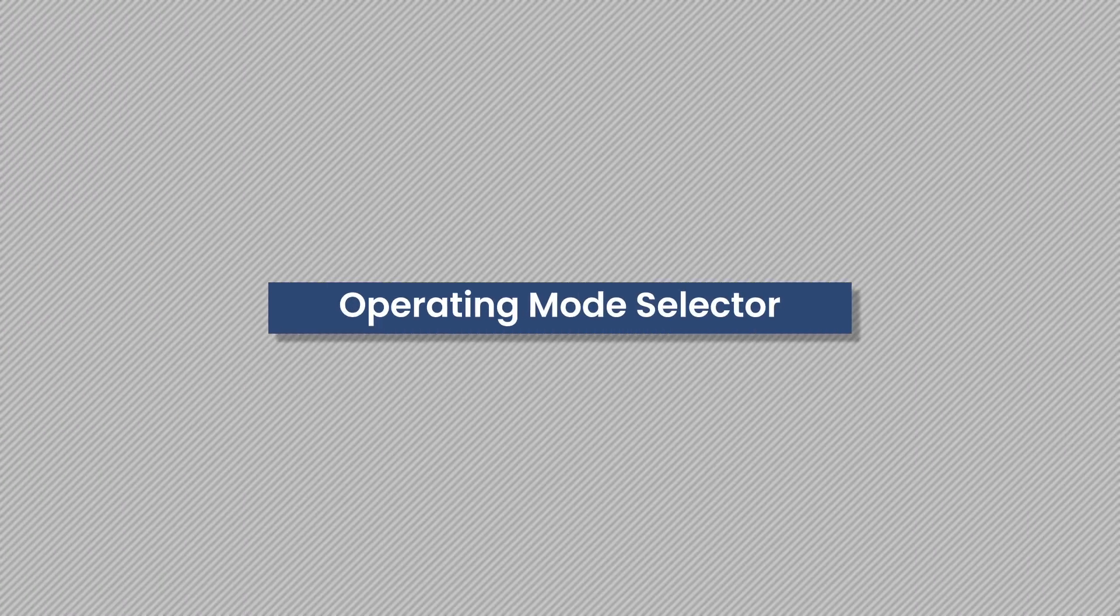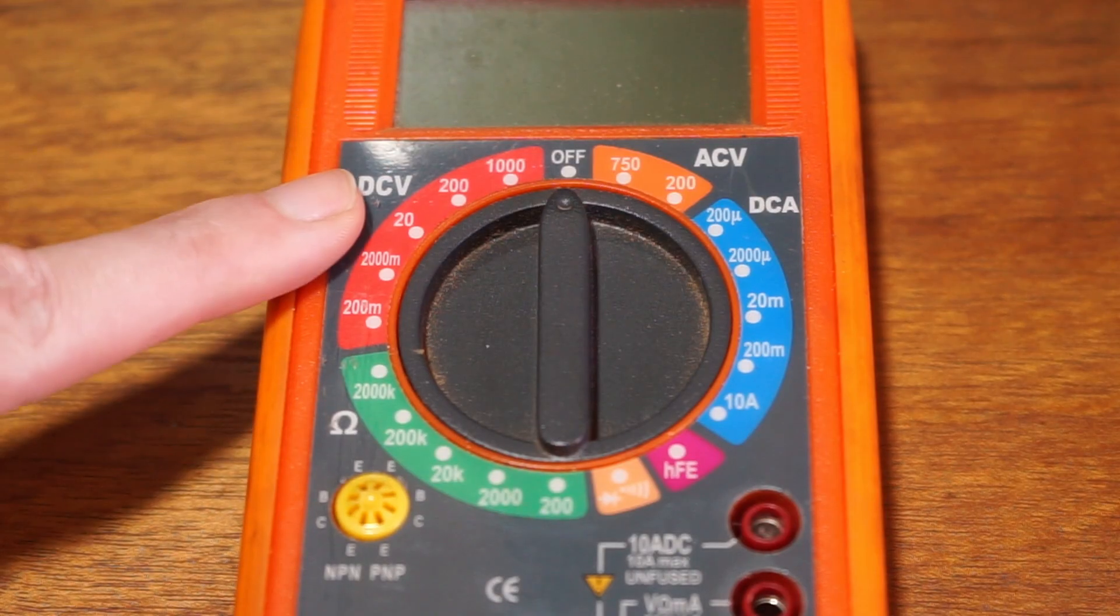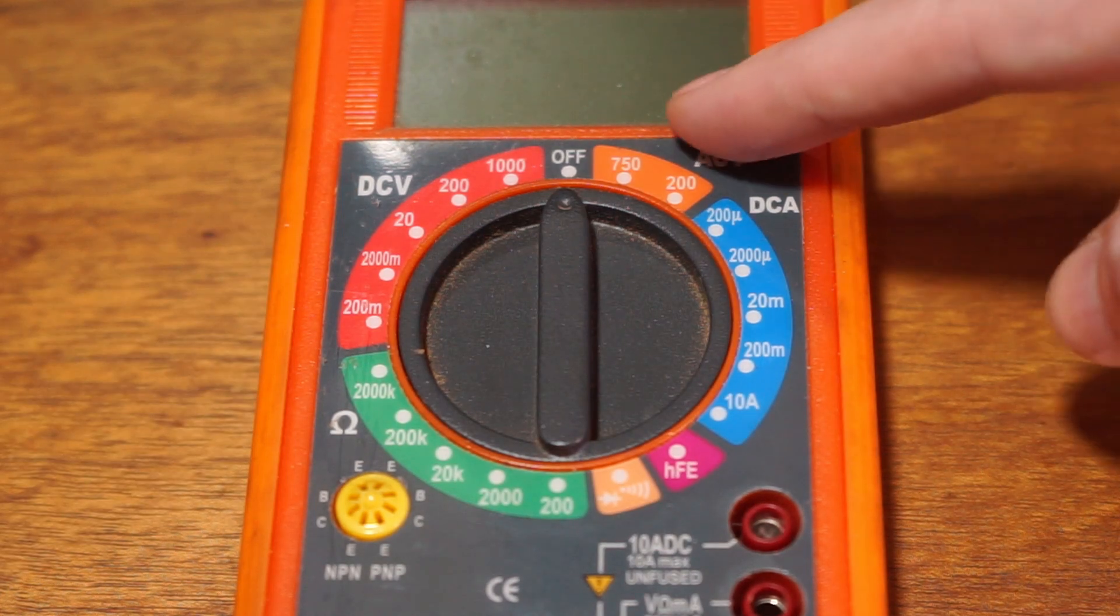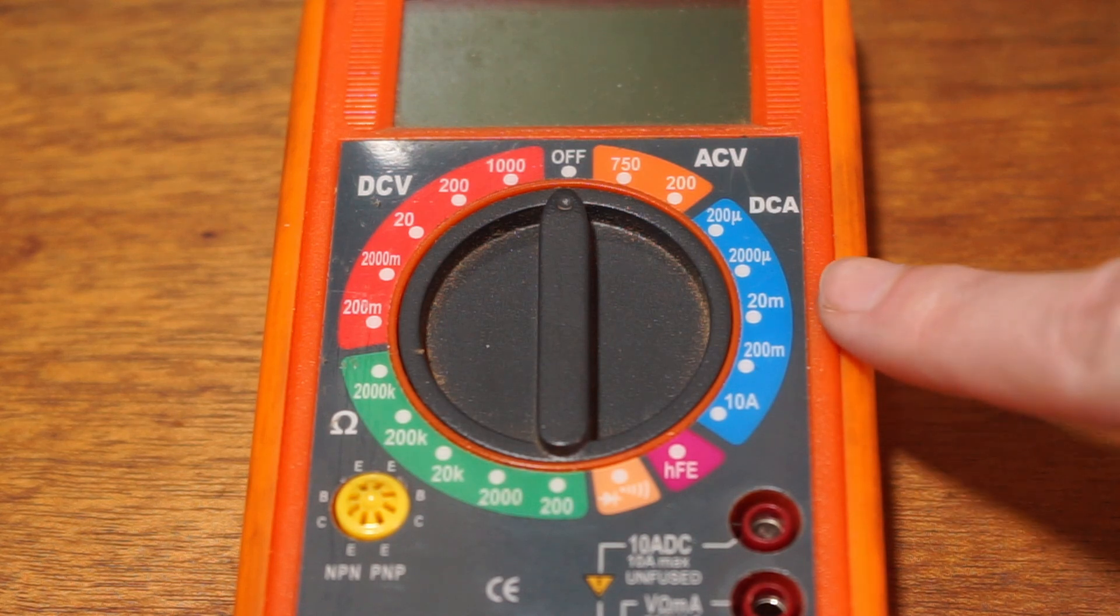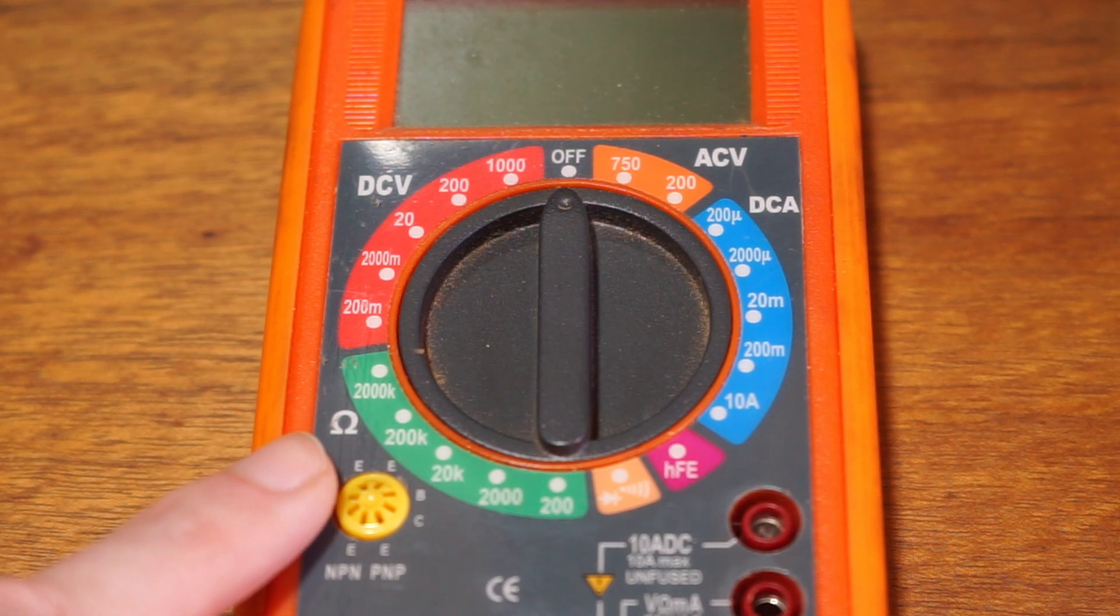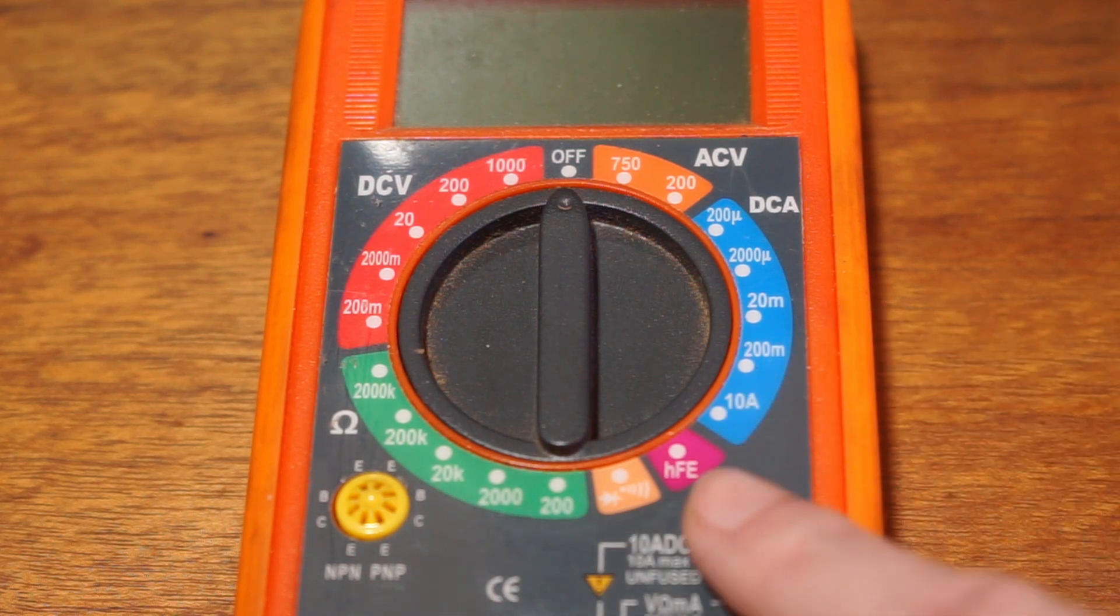Operating mode selector: on this multimeter we have options to measure the following ranges - DC volts 200 millivolts to 1000 volts, AC volts 200 volts to 750 volts, DC amps 200 micro amps to 10 amps, resistance measurements 200 ohm to 2000 kilo ohms, semiconductor test diode continuity, and a transistor check hFE or hybrid parameter forward current gain common emitter.